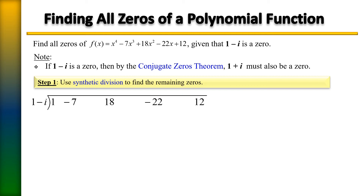Let's take the zero 1 minus i for synthetic division — it really doesn't matter which conjugate you take, because both are zeros, meaning both will produce a zero remainder when done correctly. What we want is to find the quotient so we can factor it and identify the other two zeros.